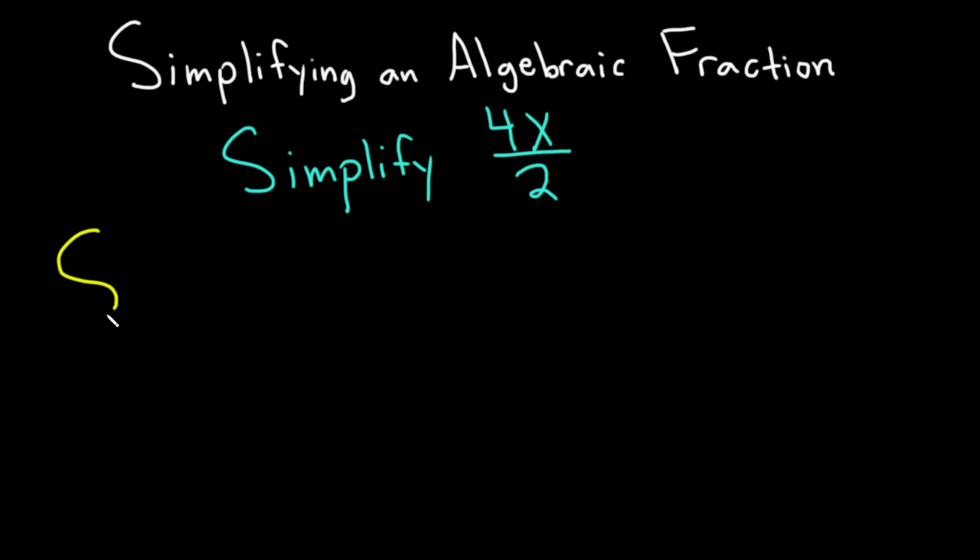Let's go ahead and carefully work through this solution. I'm going to start by writing it again. So we have 4x over 2. And what you can do here is you can factor out a 2 from the numerator. So you get 2 times 2x, and that's over 2.